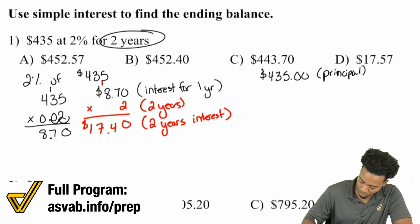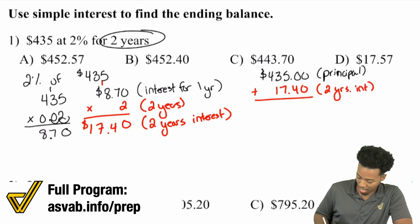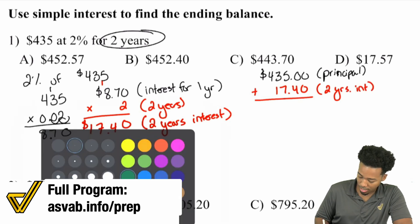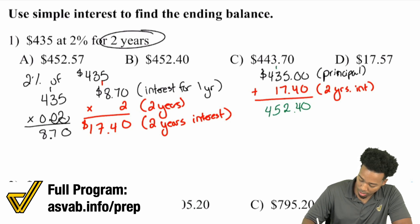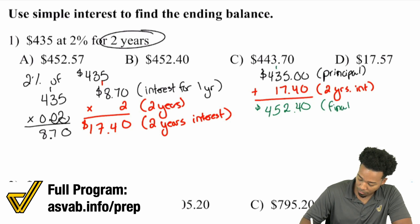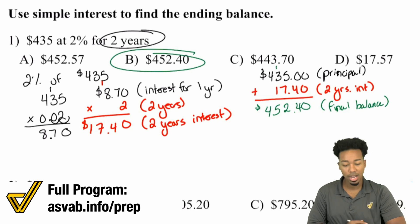From here, you're going to go ahead and add the $17.40 because this is two years of interest. $435 plus $17.40 gives you a final answer of $452.40. That is your final amount, the final balance in the account after those two years. $452.40 — booyah right there.